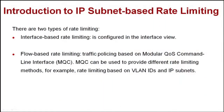Hi everyone. I'd like to show you how to configure IP subnet based rate limiting. There are two types of rate limiting: interface based and flow based rate limiting. Flow based rate limiting is MQC based traffic policing. MQC can be used to provide different rate limiting methods, for example, rate limiting based on VLAN IDs and IP subnets.